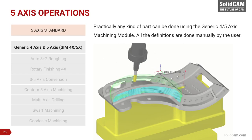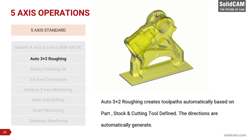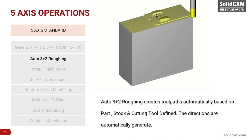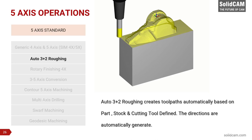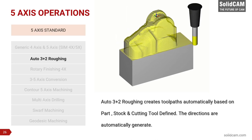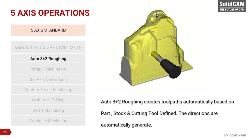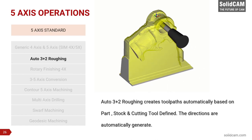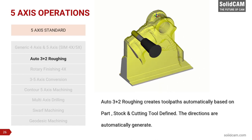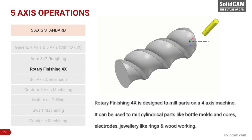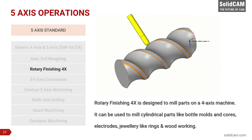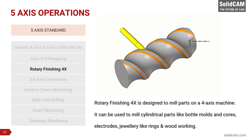Specialized operations in the standard bundle include Auto 3+2 Roughing — when machining complicated shapes on a 5-axis machine, SolidCAM automatically creates toolpaths based on the workpiece and cutting tool definitions, and can generate toolpath directions automatically. Rotary Finishing 4X is designed to mill parts on a 4-axis machine and can be used for cylindrical parts including bottle molds and cores, electrodes, jewelry such as rings, and woodworking applications.